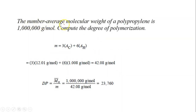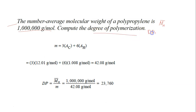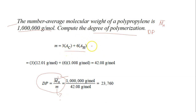Here is a second example. The number average molecular weight of a polypropylene is given as 1,000,000 grams per mole. Compute the degree of polymerization. Using the formula DP equals Mn divided by m, and since Mn is given, you need to find m — the molecular weight of the polypropylene monomer, which was calculated as 42.08 grams per mole, based on 3 carbons and 6 hydrogens.